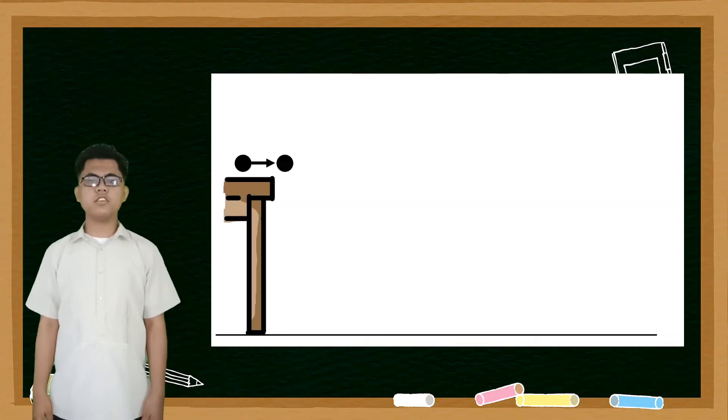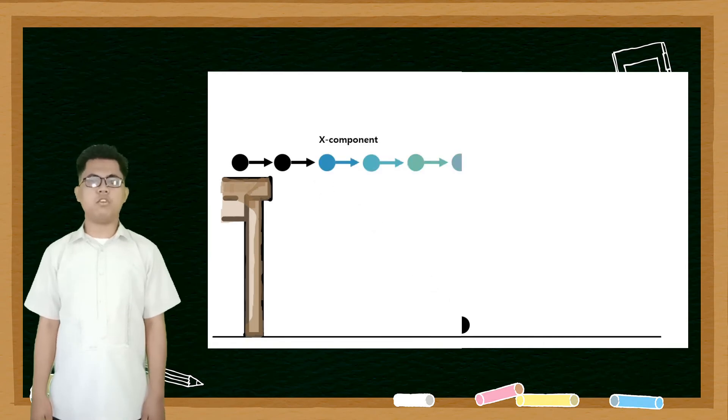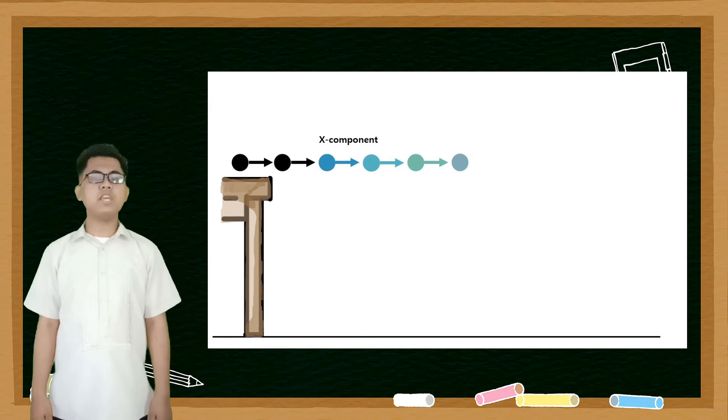Let us now consider again the ball being rolled at the edge of the table. This time, if we only consider its horizontal motion, the ball is not supposed to drop because its horizontal motion has no gravity acting on it.